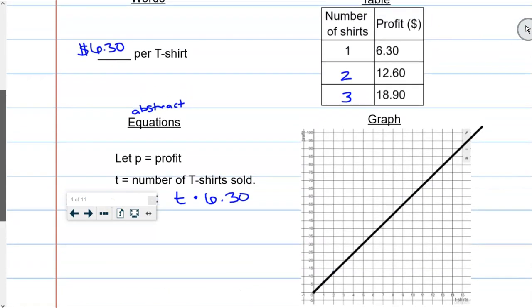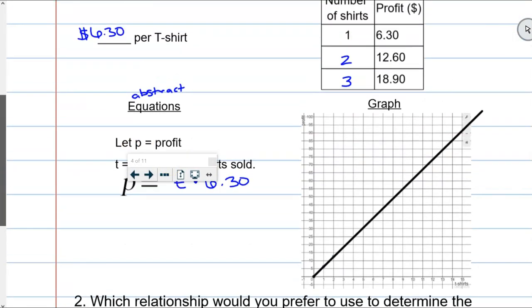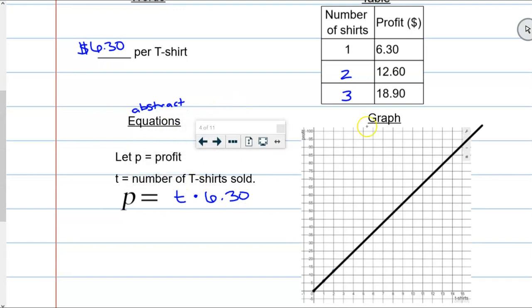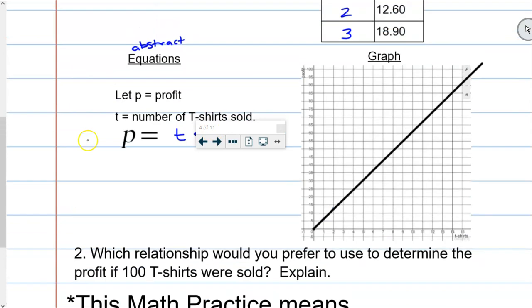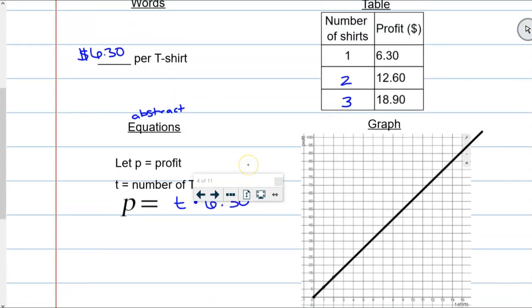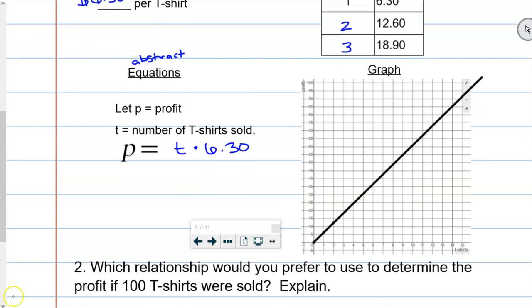And we've got four different models. We have our words, our table, our equation, and our graph. And now I want you to think about this question here. Which relationship would you prefer to use to determine the profit if 100 t-shirts were sold? Would you like to use the table? Would you like to use the graph? Would you like to use the equation? Can you use the words? Let's do a quick 20-second discussion with your group. Which one would you prefer and why? Again, here's the question. Online students, just think about this question. Come to your own conclusion. Which one would you prefer?